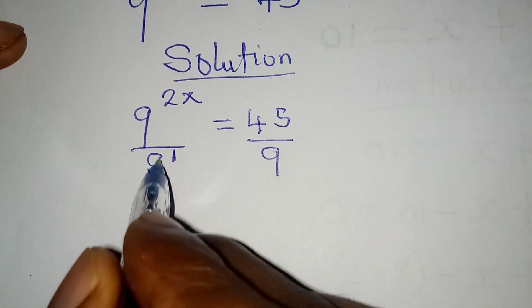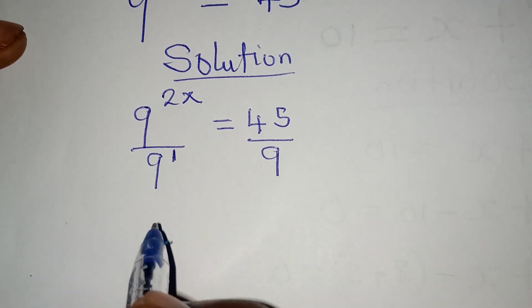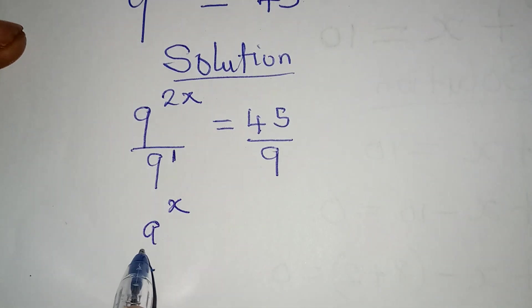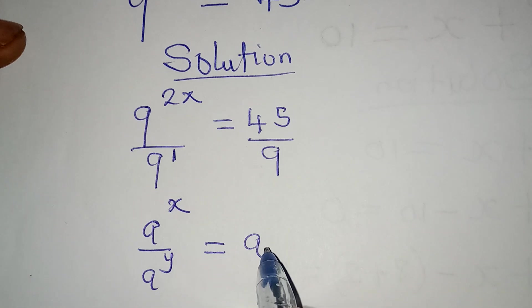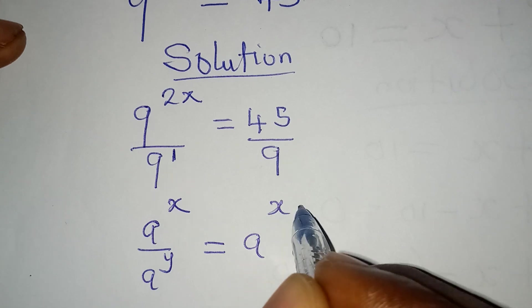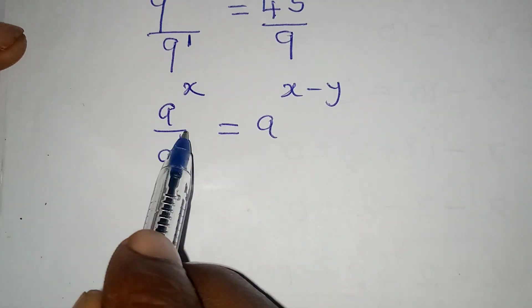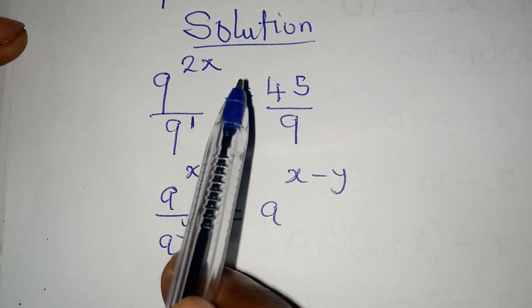So here now, according to the law of indices, remember if you have anything like a to the power of x all over a to the power of y, this will be the same thing as a to the power of x minus y, and it's because of this division.